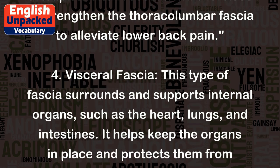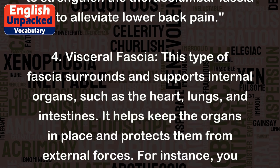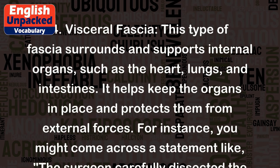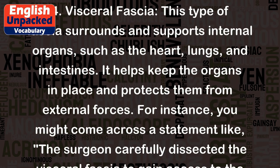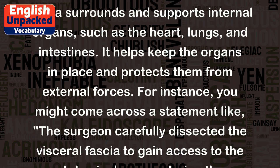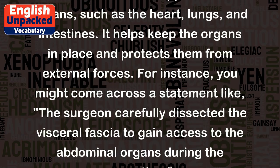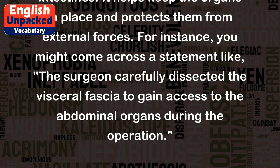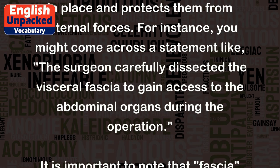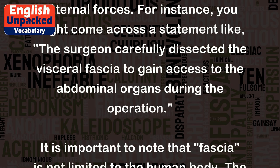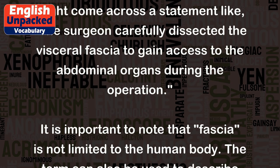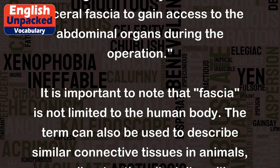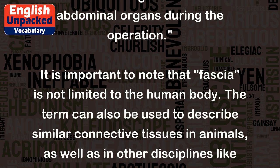4. Visceral fascia: This type of fascia surrounds and supports internal organs, such as the heart, lungs, and intestines. It helps keep the organs in place and protects them from external forces. For instance, you might come across a statement like: the surgeon carefully dissected the visceral fascia to gain access to the abdominal organs during the operation.